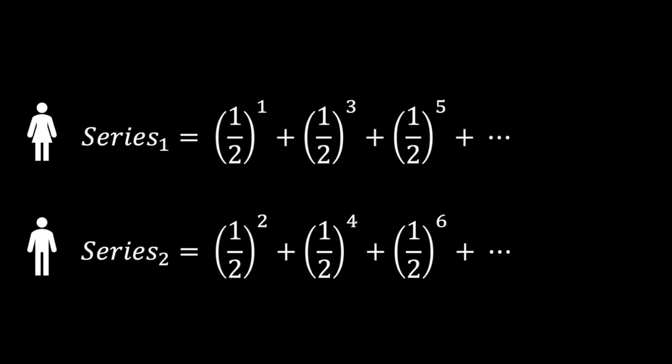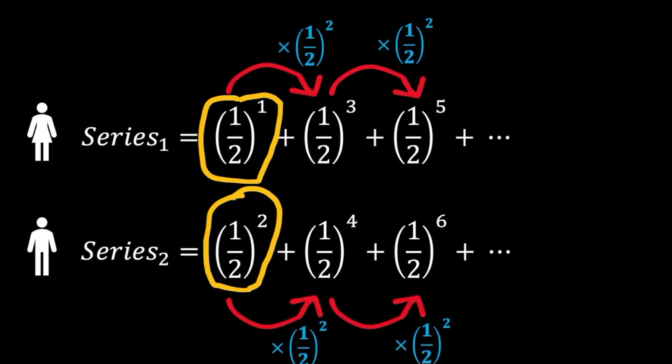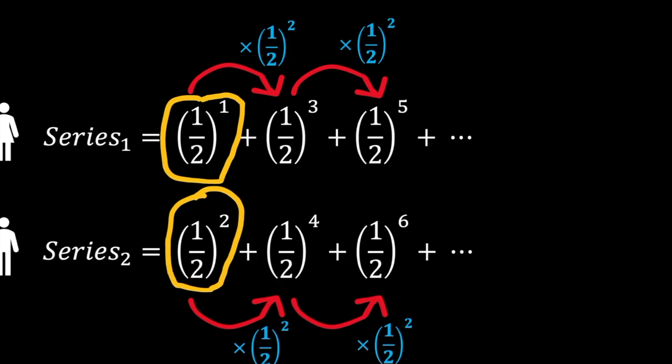Notice each series starts with a first term, with each successive term being the previous multiplied by a half raised to the power 2. The sums of these two infinite series is our answer.